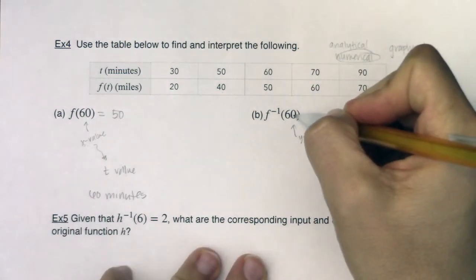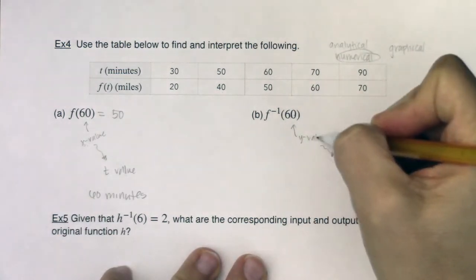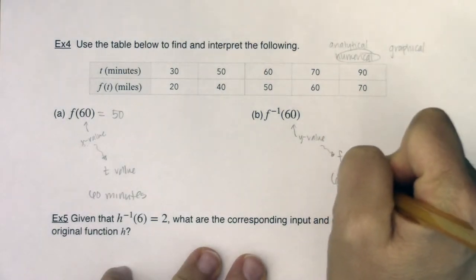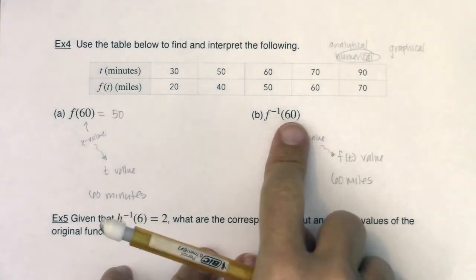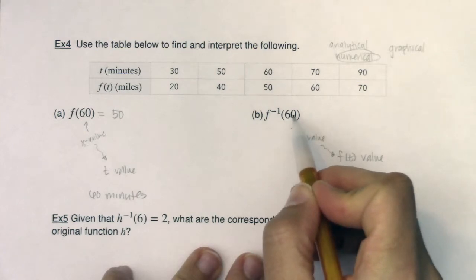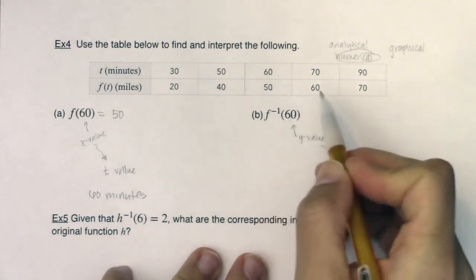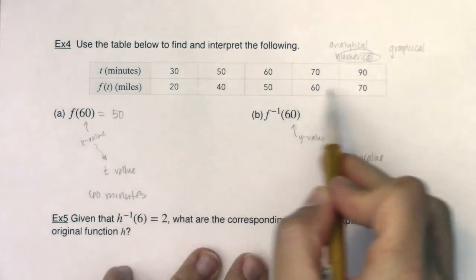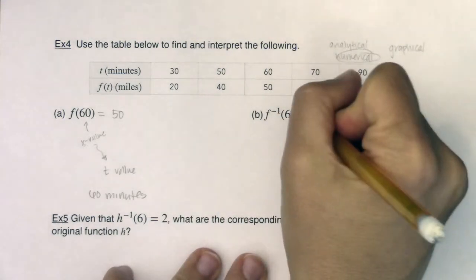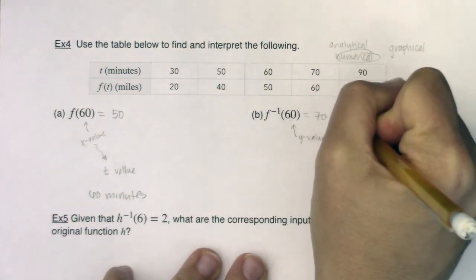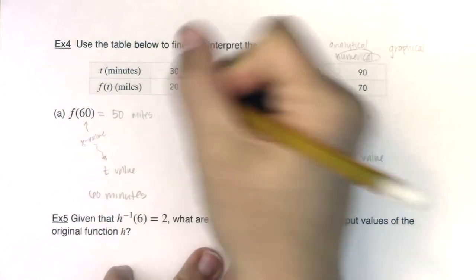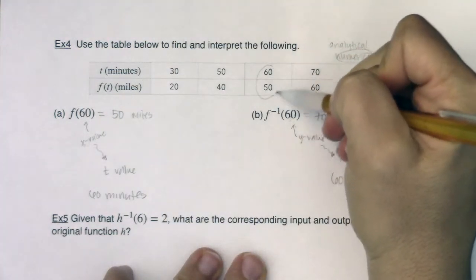Now for f inverse of 60: this 60 represents a y value — in this case, an f of t value — so it represents 60 miles. The expression is asking: how many minutes did it take before you traveled 60 miles? Looking at the f of t column for 60, the time spent there was 70 minutes. So f inverse of 60 equals 70 minutes, and f of 60 equals 50 miles — using these two ordered pairs.